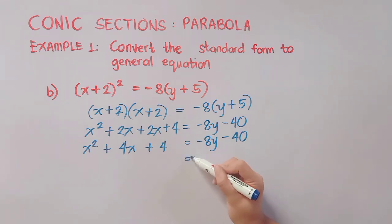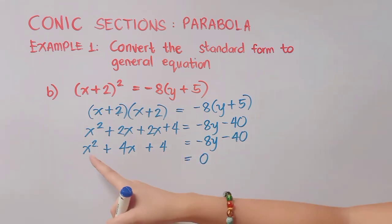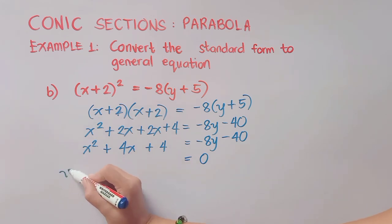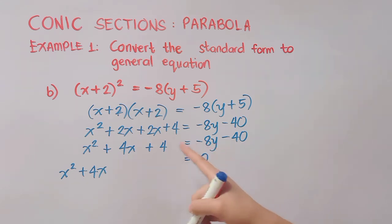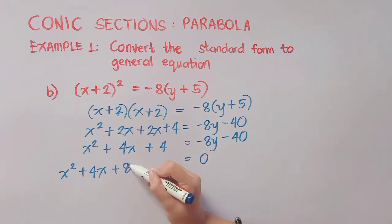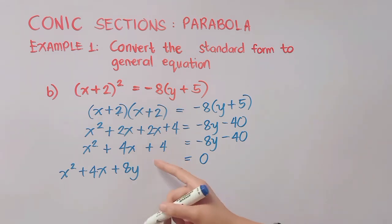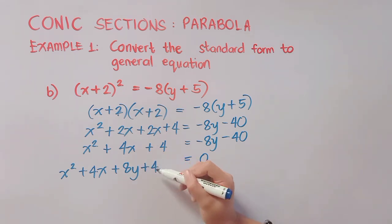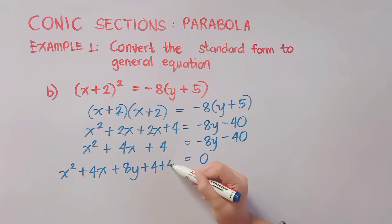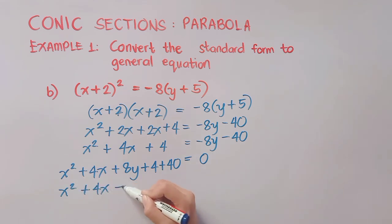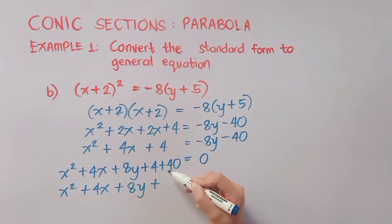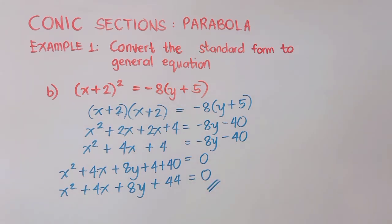Remember, in general form all terms must be on the left side. We bring x², 4x, and from negative 8y it becomes positive 8y. Bring down 4, and from negative 40 it becomes positive 40. We can still simplify: x² + 4x + 8y, and 4 plus 40 is 44, giving us x² + 4x + 8y + 44 = 0 as our final answer.